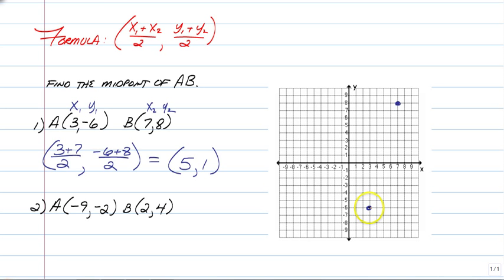So if I wanted to go from negative 6 all the way up to 8, I would have to go up 14 places. And then if I wanted to go from 3 over to 7, I would have to go to the right 4 places. So then, all I'm going to do is half of that to find the midpoint.